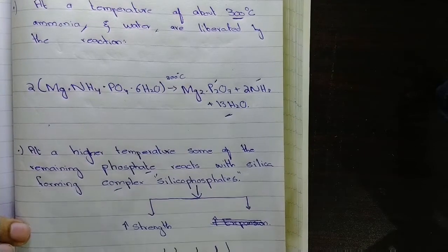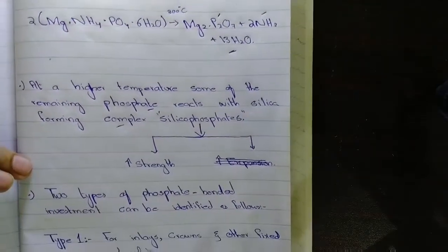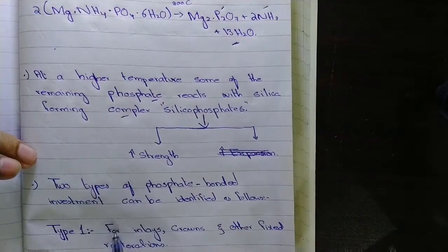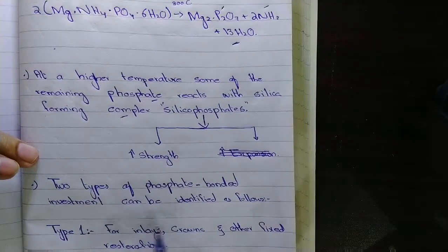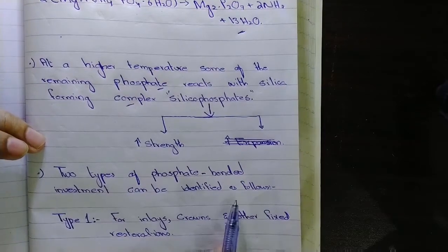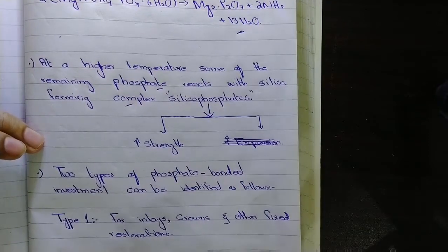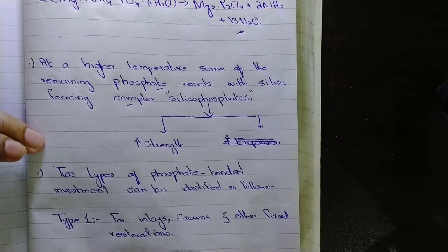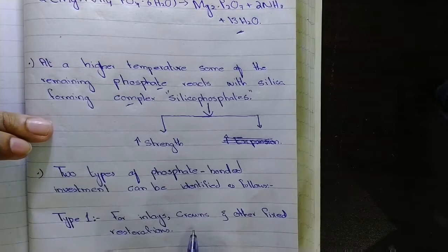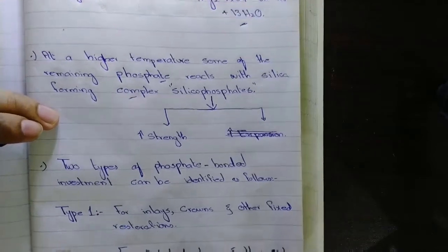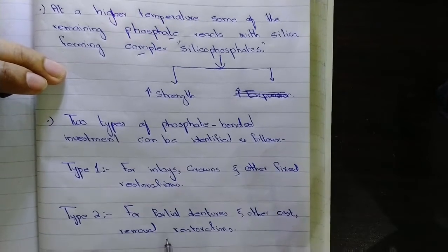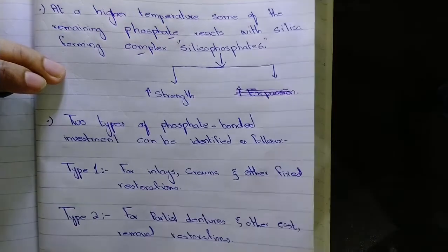There are two types of phosphate bonded investments: Type 1 is for inlays, crowns, and other fixed restorations. Type 2 is for partial dentures and other cast removal restorations.